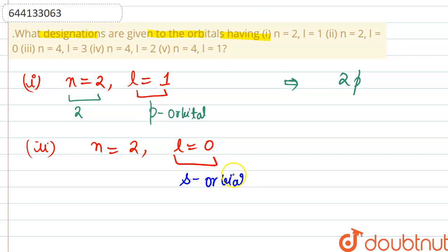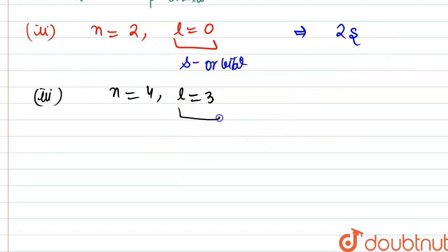Talking about the third one: n = 4, l = 3. So l value 3 means there is f orbital that we are talking about, and this means fourth shell. Hence this designation would be 4f.